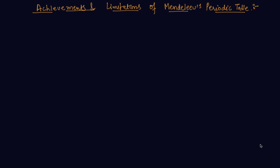As we have discussed in the previous lecture about Mendeleev's periodic table, now we will see what were the main achievements and what were the main limitations. So first we will start with the achievements of Mendeleev's periodic table.